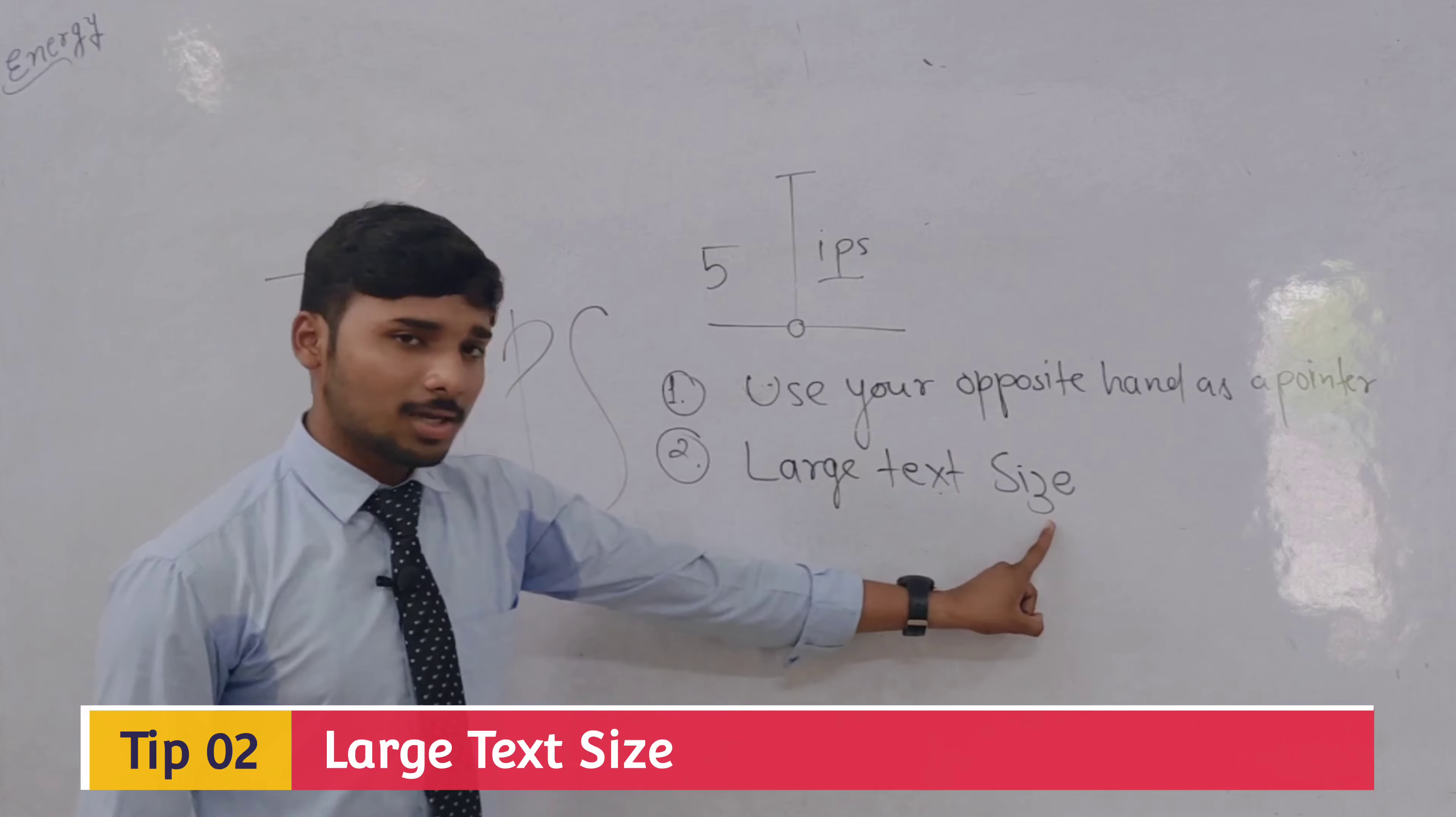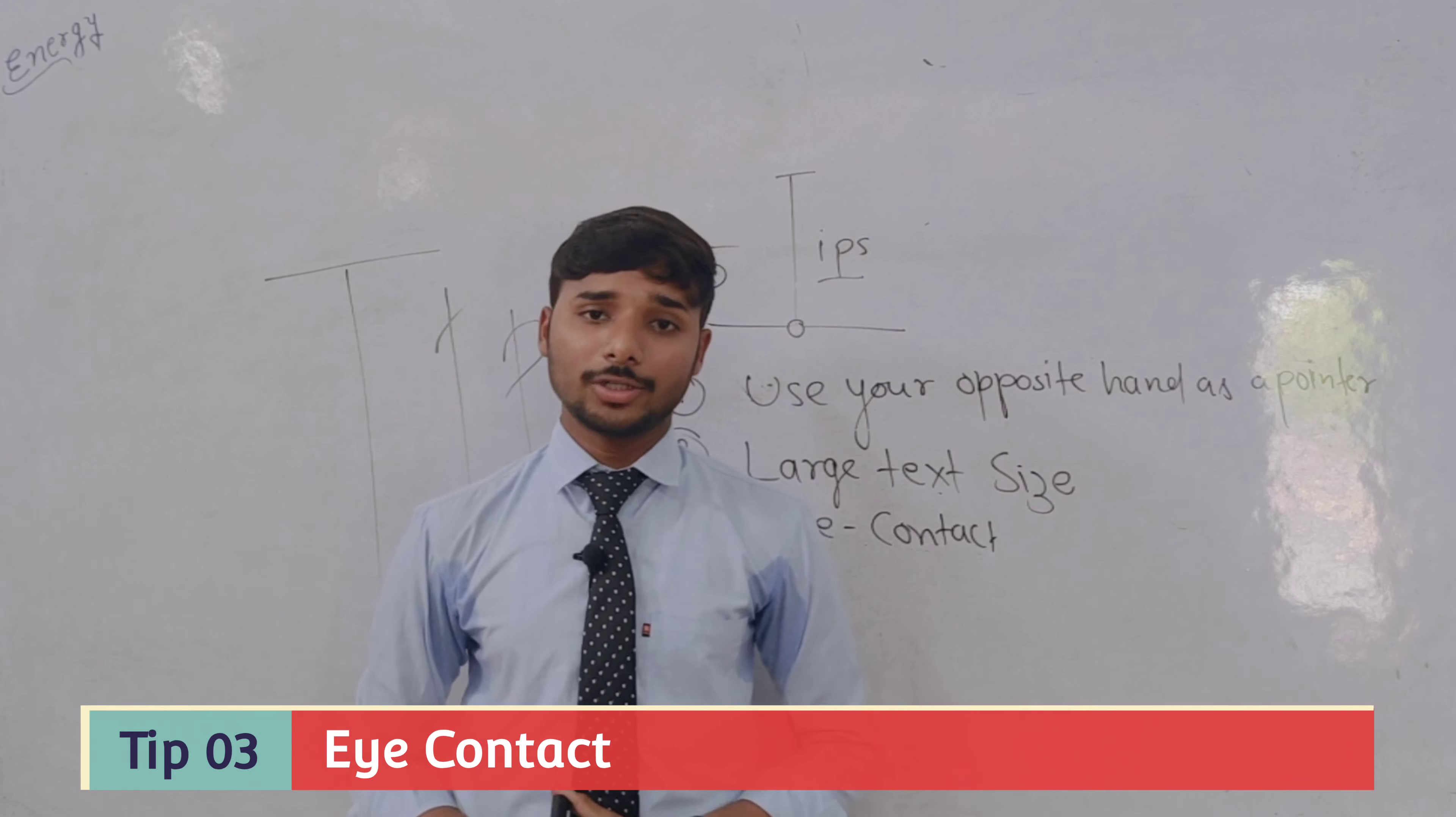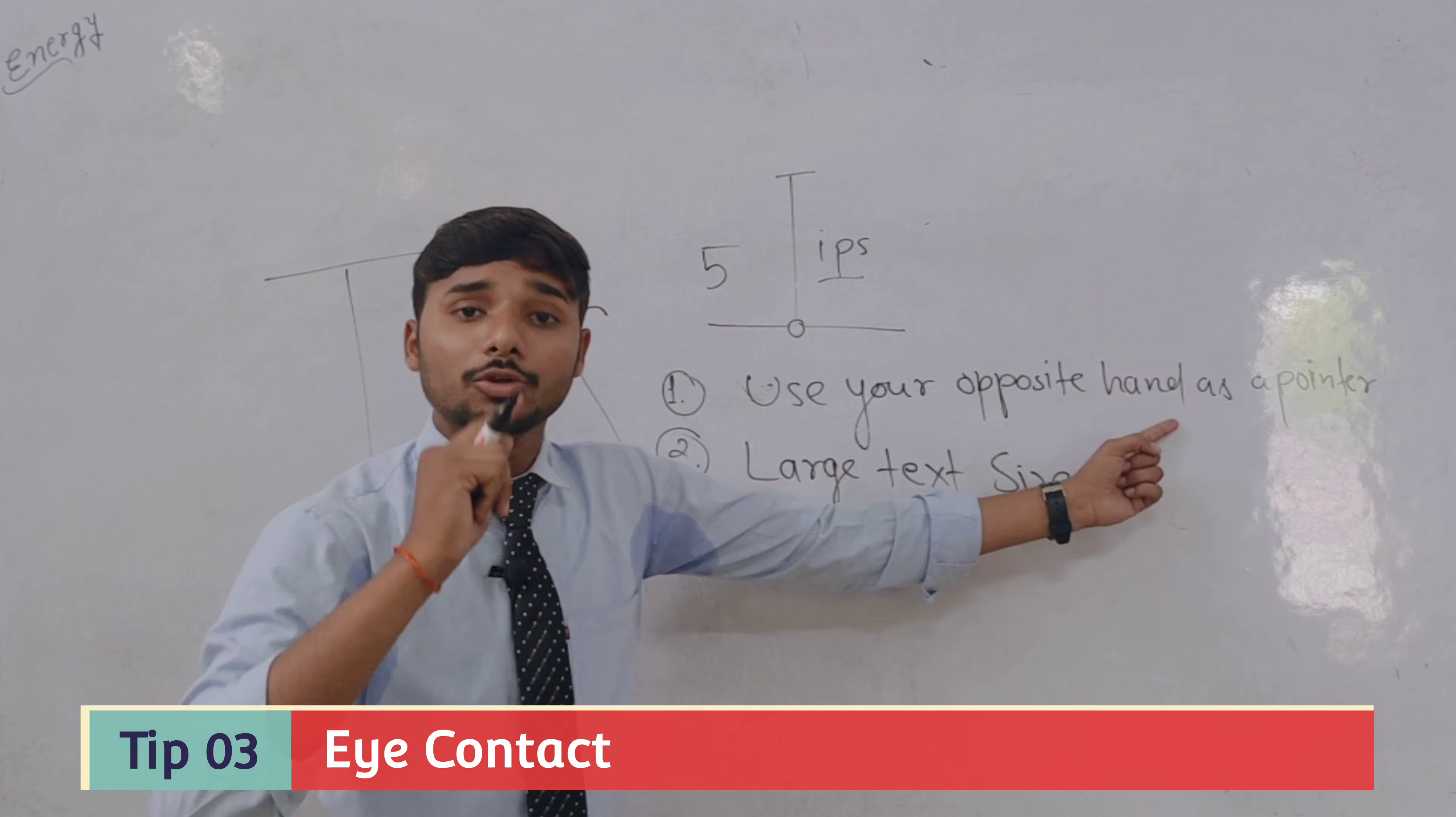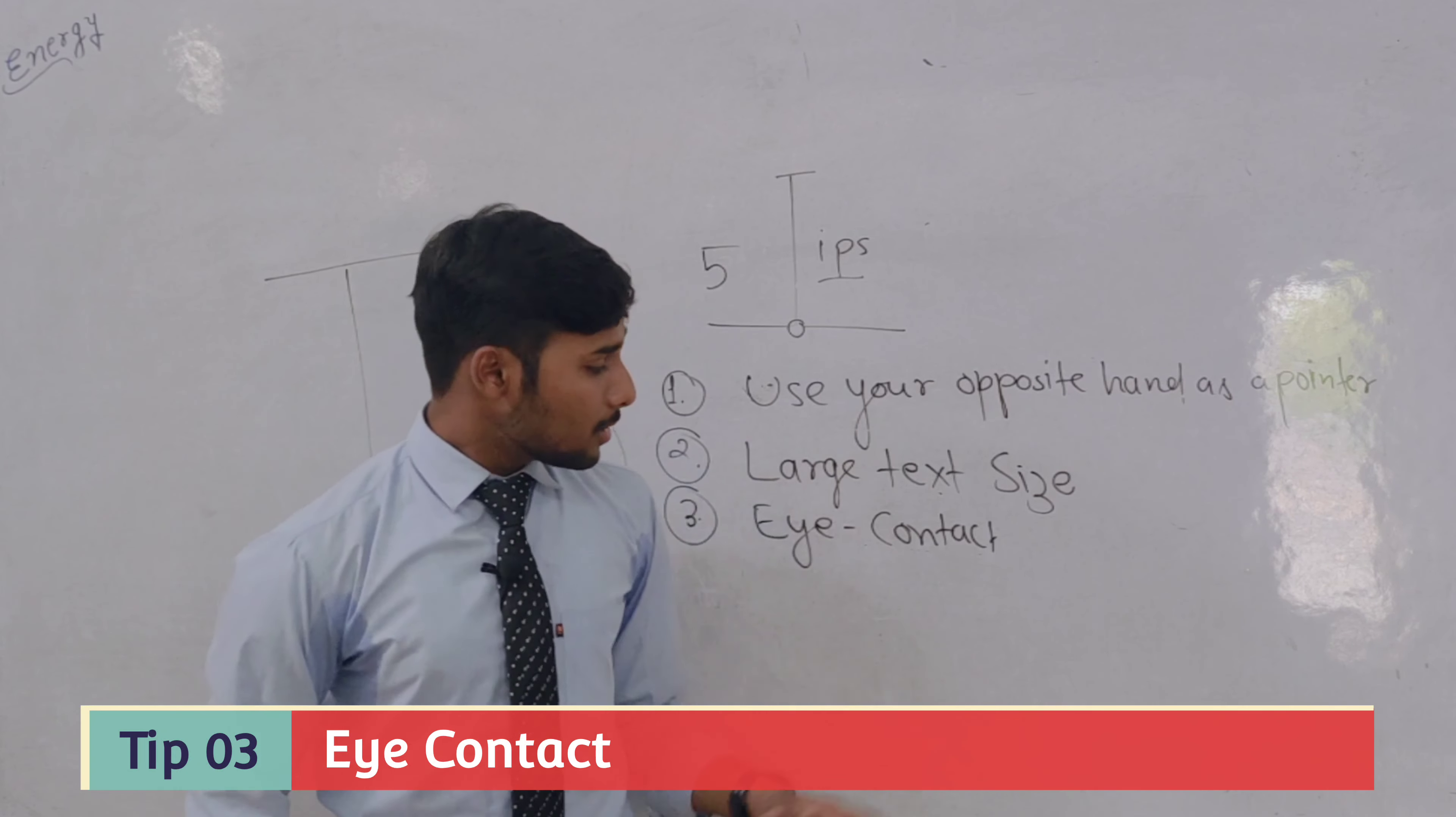Third: eye contact. If you don't make eye contact, your discussion will be broken down. What do you have to do is you have to make a great eye contact. When you explain, use your left hand as a pointer and maintain eye contact. So always make a great eye contact in your presentation.